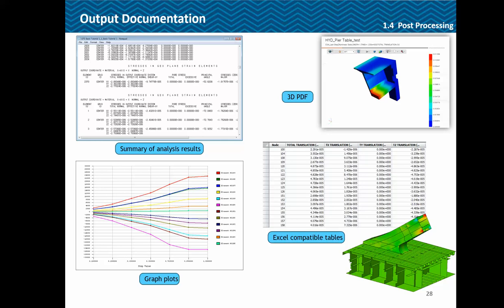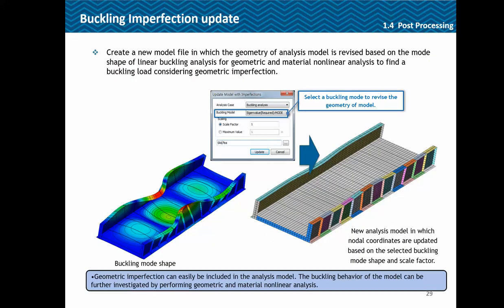For documentation, you can get a summary of analysis results, charts, and a 3D PDF which can be shared with clients, as well as Excel-compatible tables. In the post-processing part for buckling analysis, imperfections need to be taken up in the model for further nonlinear analysis. You can do linear buckling analysis and any particular mode can be exported and directly applied to the model to update the geometry, whereupon further geometric nonlinear analysis can be performed.